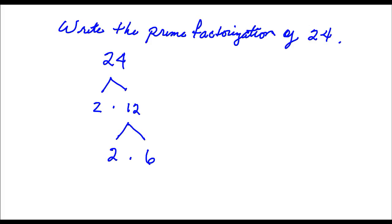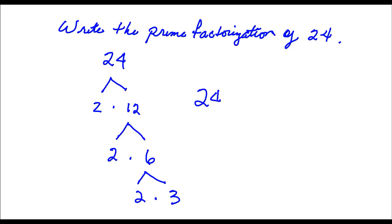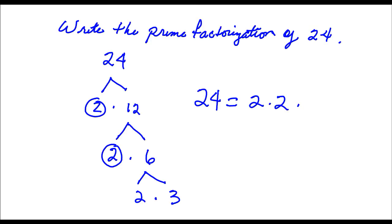6 is evenly divisible by 2, and I write 6 as 2 times 3. So the prime factorization of 24 is 2 times 2 times 2 times 3.